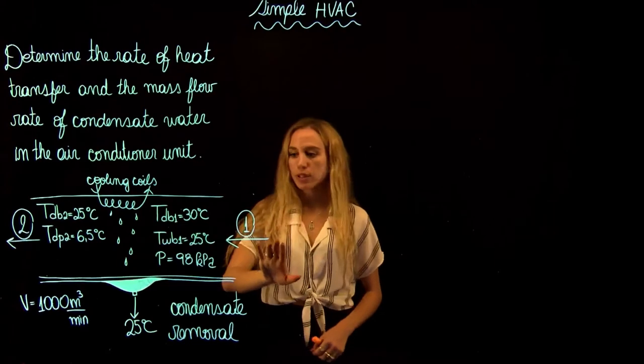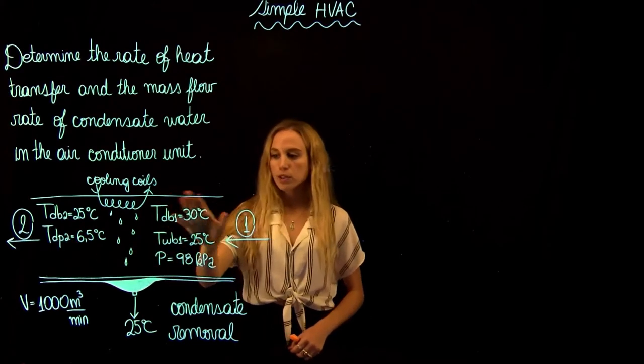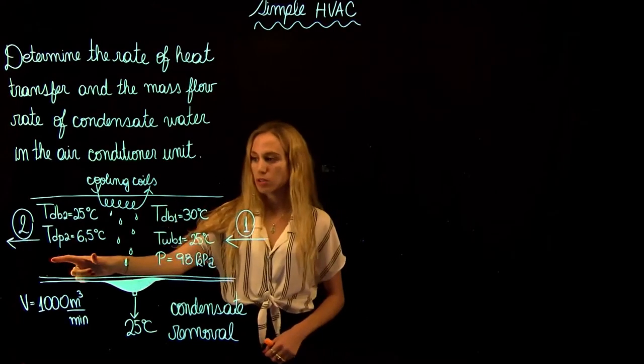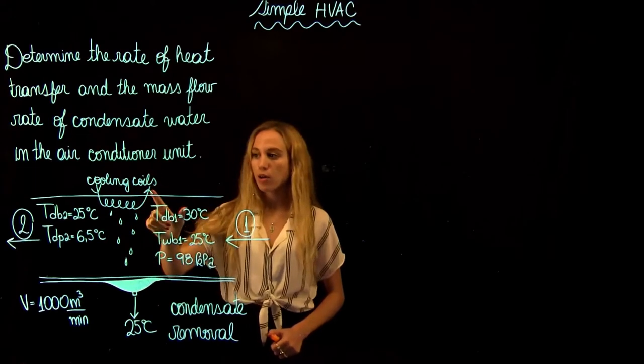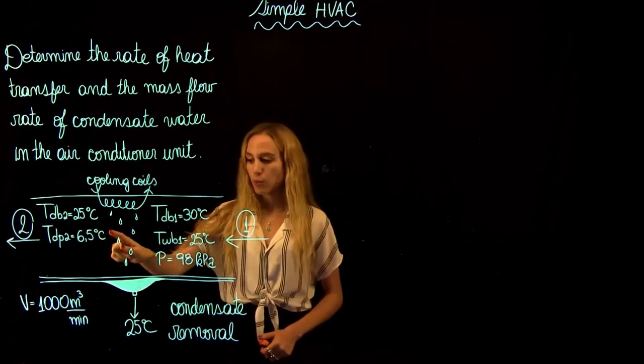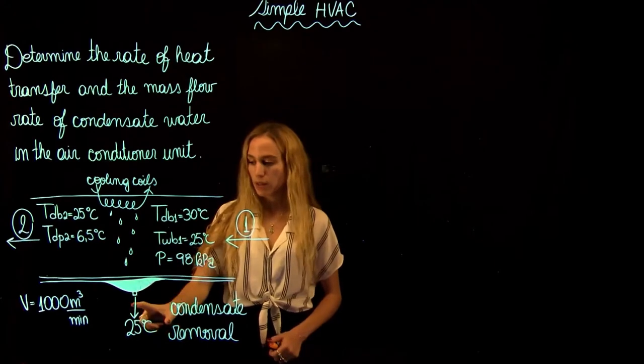So this is what's happening. We have a flow going from 1 to 2. We have some conditions at 1, some conditions at 2. We have cooling coils that are cooling down the flow and then we are removing the condensate at 25 degrees Celsius.